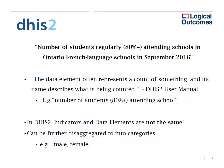Using our previous example — this adapted USDA indicator which states 'number of students regularly attending schools in Ontario French language schools in September 2016,' where 'regularly' means 80% or higher — if we look at the 'what,' that would be the data element. The DHIS 2 user manual states that a data element often represents the count of something.